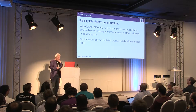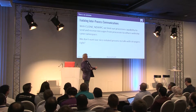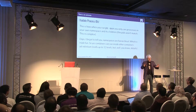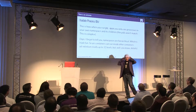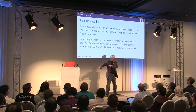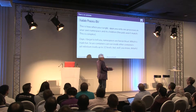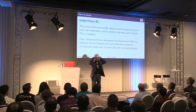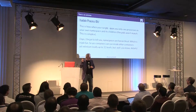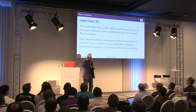We can isolate IPC — we don't want our process to talk with strangers. And we can isolate process IDs. Together with storage, we're kind of filling in a container, because most of the world has disappeared. Now that we can isolate process IDs, the other processes disappear — if I do ps aux, I only see myself and the other processes in the same namespace. And the kids. Namespaces are hierarchical, and you can run containers in containers in containers — 32 levels deep. It's not a bad idea at all, it's just a Docker limitation, not an inherent limitation.